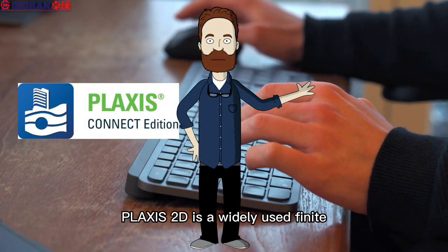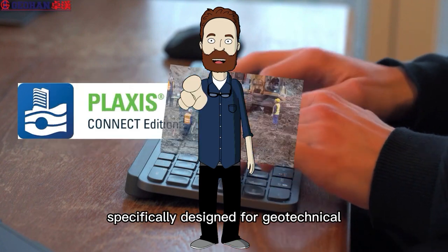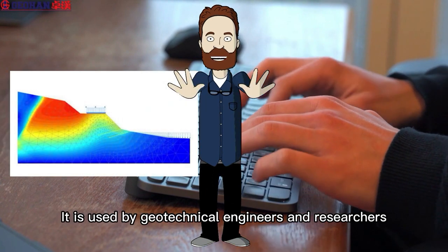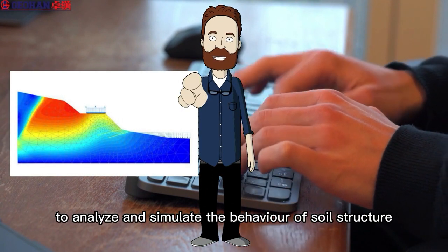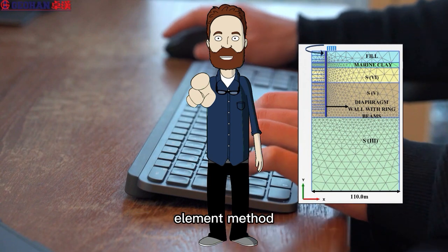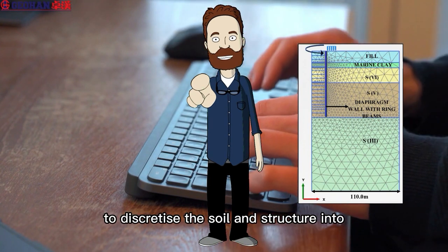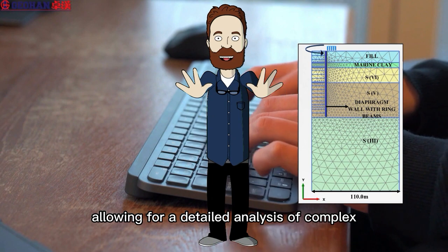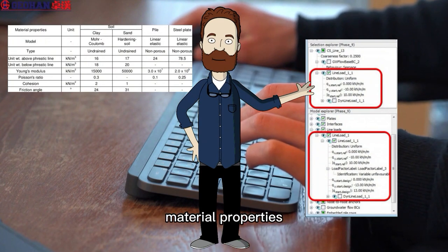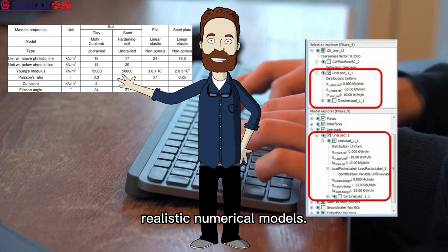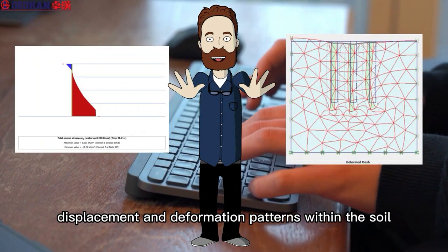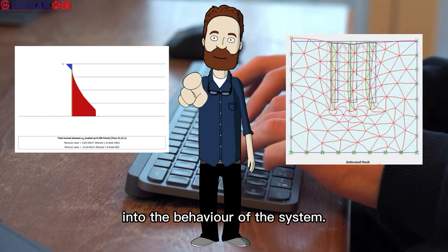Plexis 2D is a widely used finite element analysis software program specifically designed for geotechnical engineering and soil mechanics applications. It is used to analyze and simulate the behavior of soil structure interactions in two-dimensional space. The software uses the finite element method to discretize the soil and structure into smaller elements, allowing for detailed analysis of complex geotechnical problems. Users can input geotechnical data, material properties, boundary conditions, and loads to create realistic numerical models. The software then calculates stress, displacement, and deformation patterns within the soil and structures.